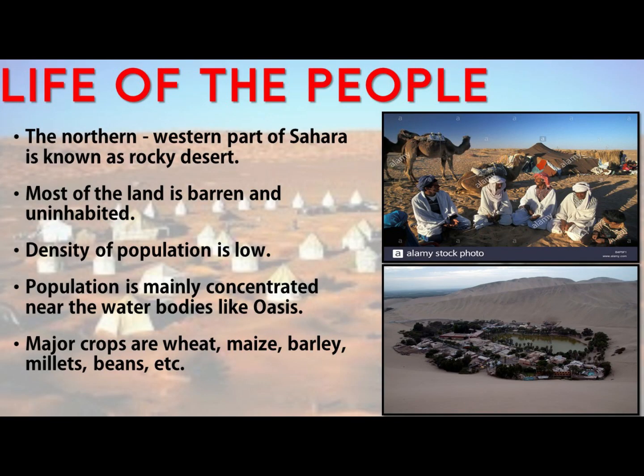Life of the people in the Sahara desert. The northwestern part of the Sahara desert is known as rocky desert. Most of the land here is barren and uninhabited, and the density of population is very low. Population is mainly concentrated near water bodies like oasis — a fertile spot in a desert where water is found — and people do cultivation around it. The major crops grown here are wheat, maize, barley, millet, and beans. People prefer white and loose clothes to bear the heat.